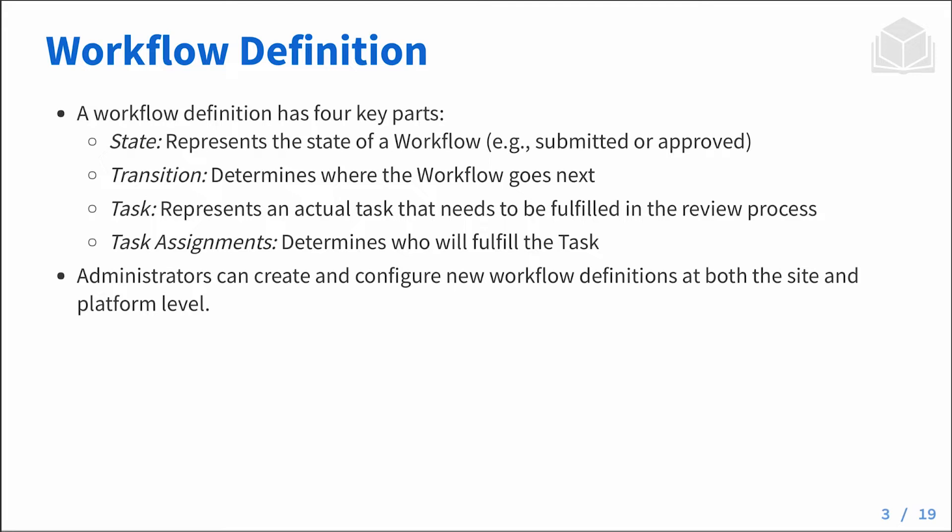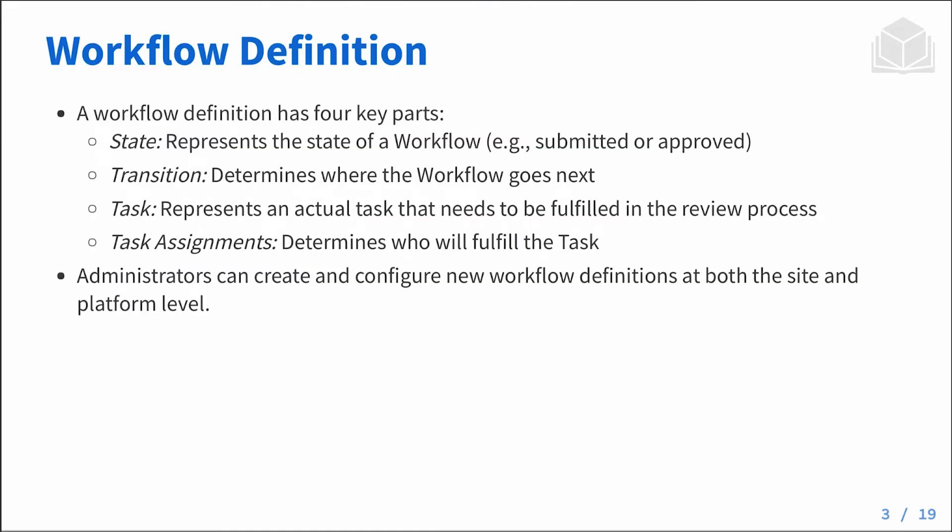The first key part is a state — the state of the process, where we are in the process. Typically there is a starting state, where something is sent into the workflow for review, and a published state, where something is approved. Once it's approved, it's given that stamp of approval so we can use it on pages or as a content asset on the platform. You need states — at the very least the starting point and the ending point of the workflow definition.